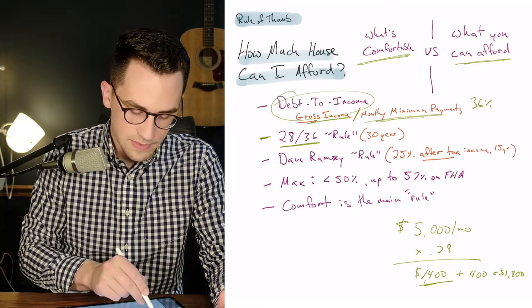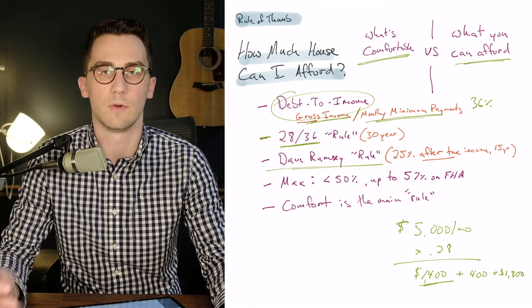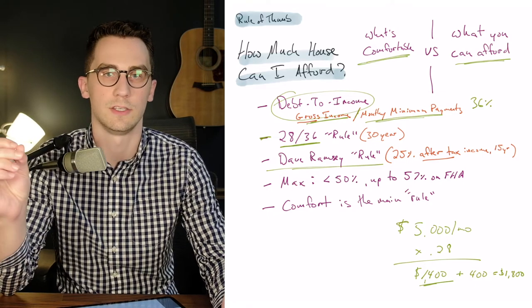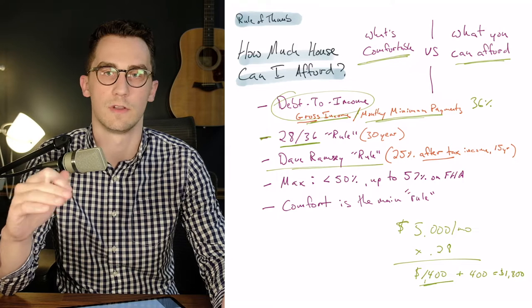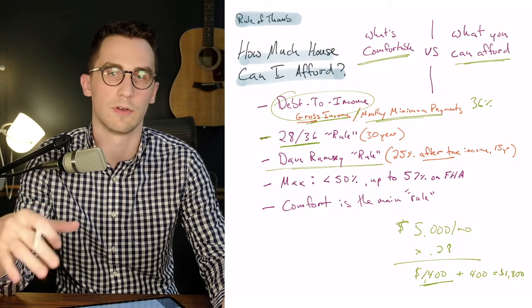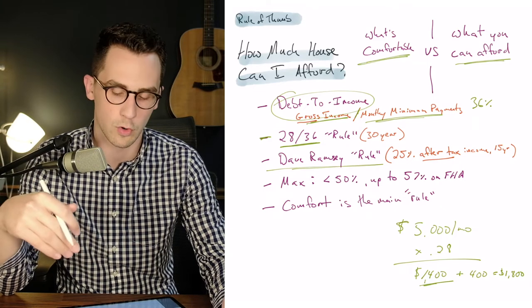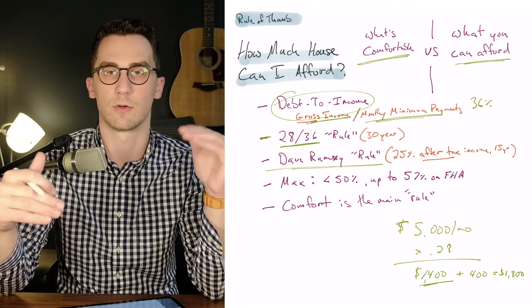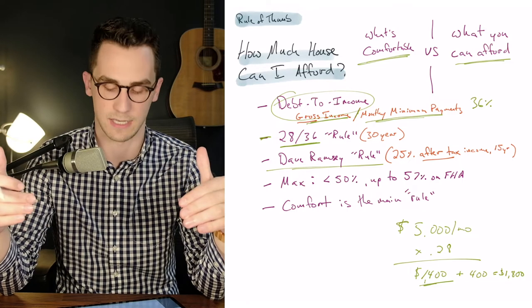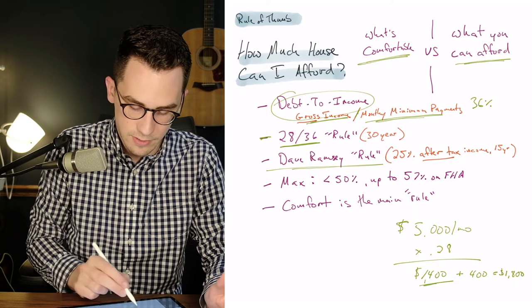Alright, there's also the Dave Ramsey rule. Dave Ramsey is super conservative. So with Dave Ramsey, what he's saying is that your mortgage payment should, first of all, only be on a 15 year. He doesn't believe in doing a 30 year loan or a 25 or 20, only a 15 year loan. And then your mortgage payment should be 25% or less of your after tax income. So in this scenario with the five grand a month, let's say your after tax income was $3,500 a month.